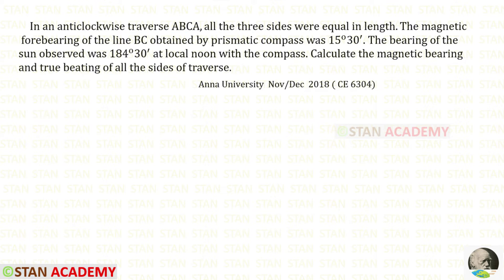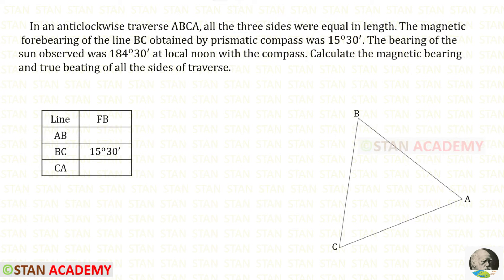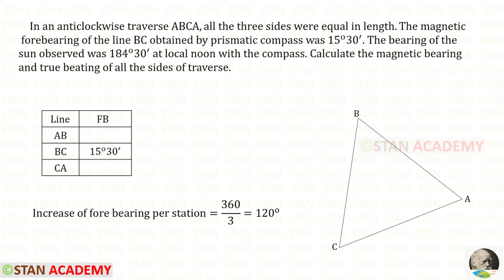From the question, we can assume that the traverse is a triangle because there are three sides, and all of them are equal in length. The forebearing of the line BC is given as 15 degrees 30 minutes. We have to find the forebearing for AB and CA. Let us find the increase of forebearing per station.